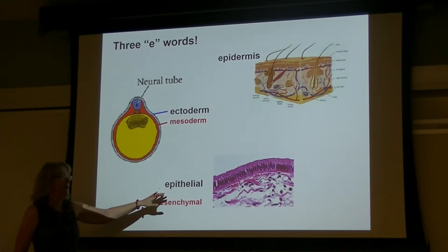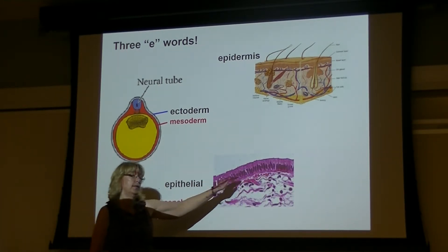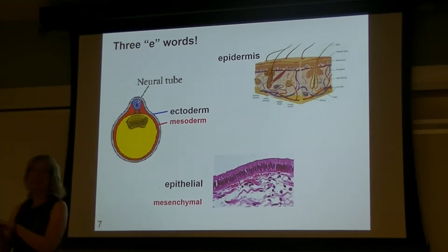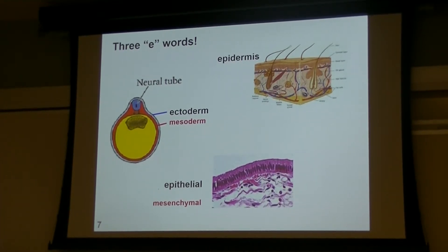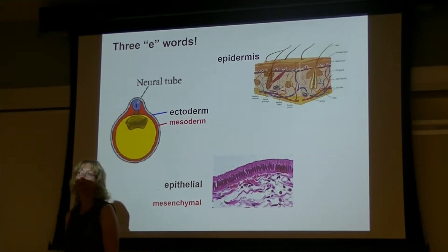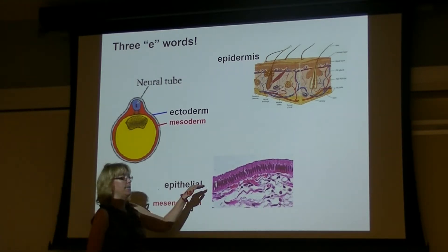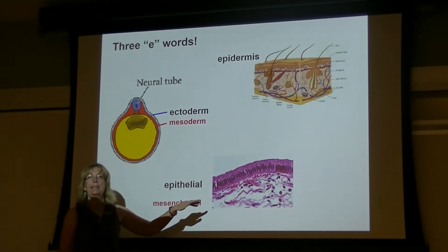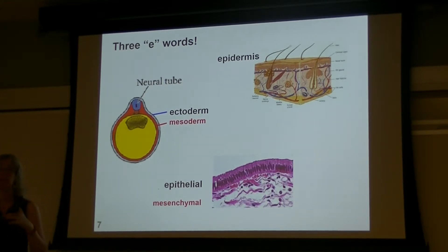Then, epithelial — that really refers to the arrangement of cells in a sheet or layer. The epidermis is indeed an epithelial layer, and often ectoderm tissues are epithelial in nature, but the meaning of the word really refers to the arrangement of cells — connected to each other by tight junctions or adherence junctions — rather than anything to do with what germ layer they came from.